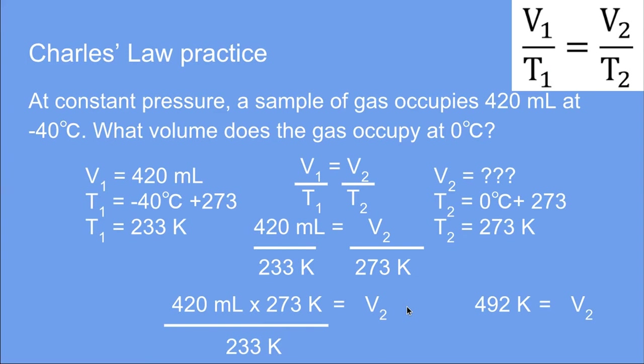And that's pretty much all there is to Charles' Law problems. If you know how to work with your variables and solve for the unknown, they're very simple, straightforward problems. The hardest part really comes from grabbing the information from the problem and setting it up in the right way.